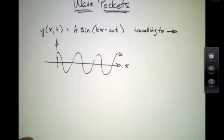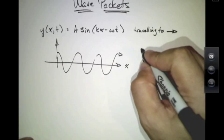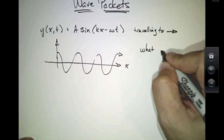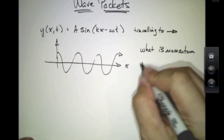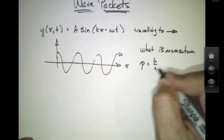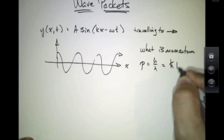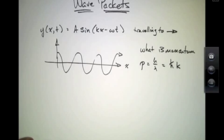In this case, we can ask, what is the momentum of such a particle? Well, since p is h over lambda, or h bar k, the case of the traveling sine wave has a uniquely defined momentum. It's exactly p, which is given by h bar times k.